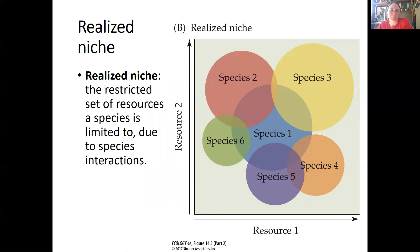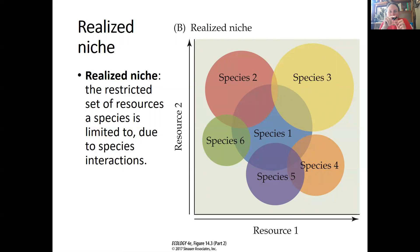The realized niche is the restricted set of resources that a species is limited to. You can see that all around the fundamental niche for species one, other species come in and compete for subsets of those resources. So the realized niche for species one is much smaller — just that inside outline of blue. That's what it can access easily without competition, though it may still have access to outer resources in those Venn diagram spaces, but then it's competing with other species for those things.